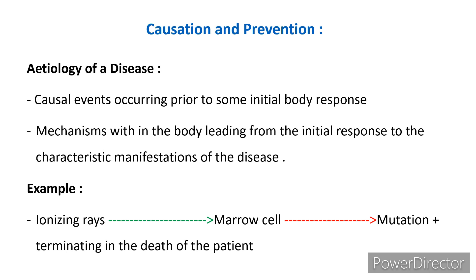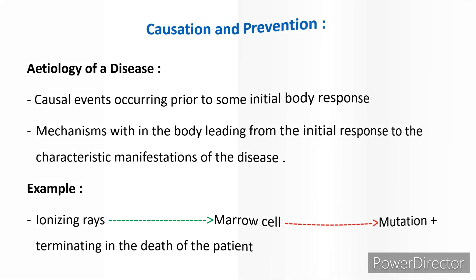Causation and prevention: the etiology of any disease consists of two parts. First, causal events occurring prior to some initial body response. Second, mechanisms within the body leading from the initial response to the characteristic manifestations of the disease. For example, ionizing rays as the causative agent and marrow cells as the body structure: the first part covers all events from exposure to ionizing rays until they contact the marrow cell. Once the rays contact the marrow cell the body starts responding, and from that point all mechanisms — mutation terminating in the death of the patient — constitute the second part.